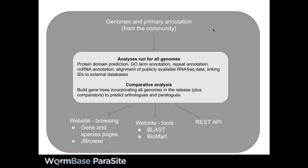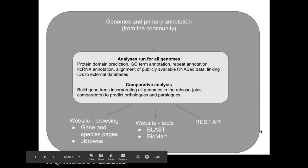Once we've got that primary data, we then run some analyses across all of our genomes. We predict protein domains on the annotated genes, annotate GO terms to those domains, annotate repeats, annotate non-coding RNAs, and align publicly available RNA-seq data. We also link our IDs to IDs of external databases like UniProt. For all genomes, we do comparative analyses: we build gene trees incorporating all genomes for each release plus a few comparative species, and we predict orthologs and paralogs from those gene trees.